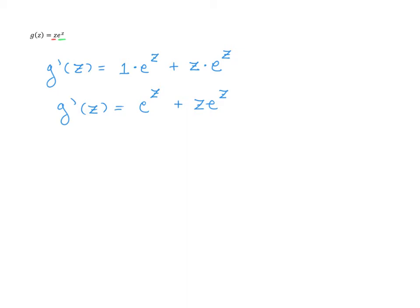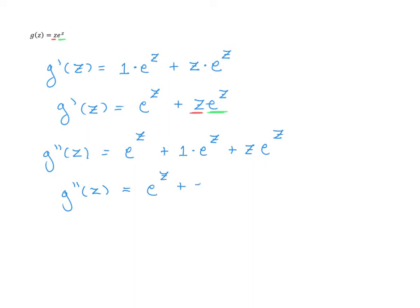Now, if I want to take the derivative of this to get the second derivative, I'll start with e to the z — the derivative of e to the z is e to the z. Then I add on the derivative of z times e to the z, which requires the product rule again: 1 times e to the z plus z times e to the z. Simplifying this: e to the z plus e to the z plus z times e to the z, which gives us 2e to the z plus z times e to the z. So this is the final answer for the second derivative.